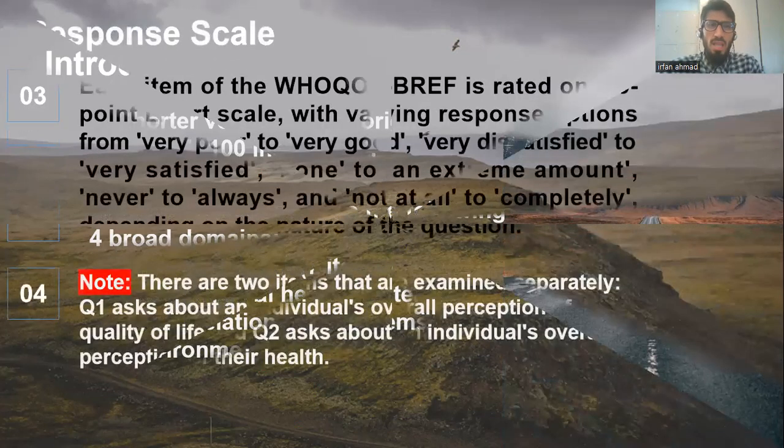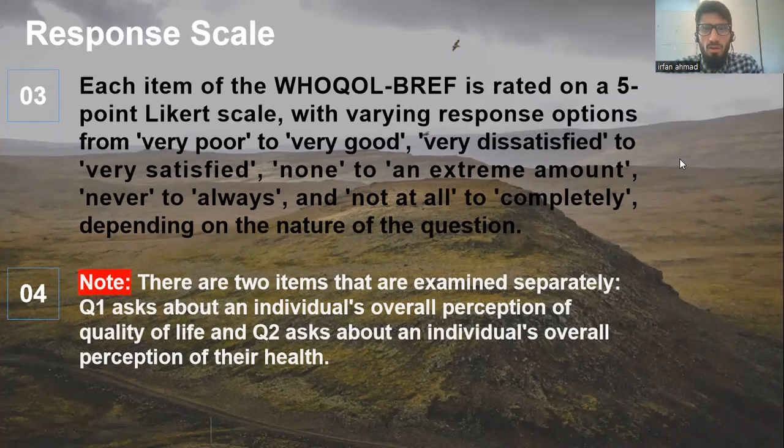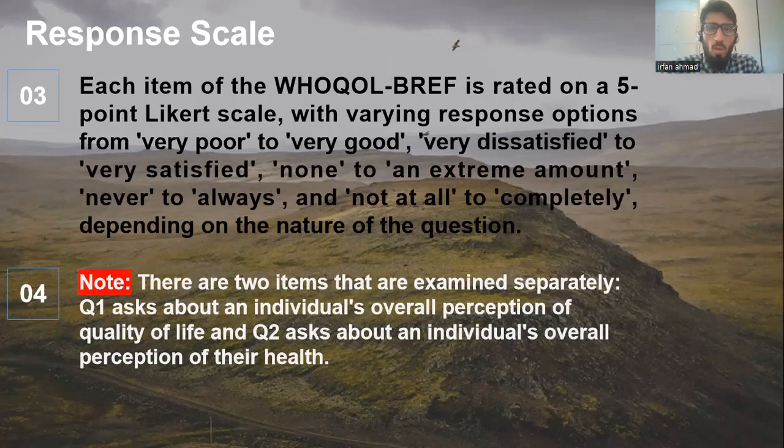Now, the score response scales. Each item of WHO brief quality of life is rated on the five point Likert scales, with varying response options from very poor to very good, or some questions have very dissatisfied to very satisfied, or none to an extreme amount, never to always, and not at all to complete, depending on the nature of questions.